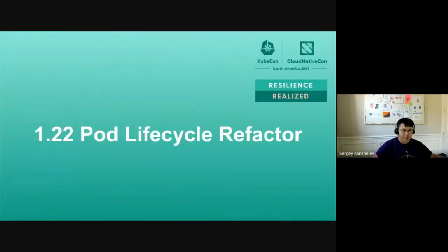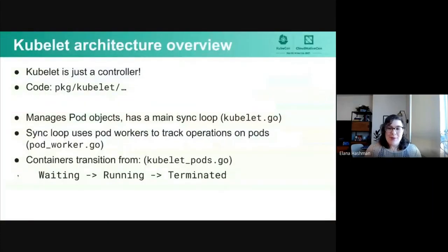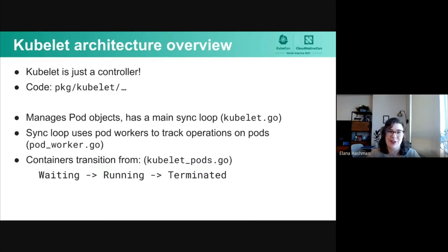KEPs are very important for delivering new features, but equally important is reliability, refactoring, and optimization work. So it's really important for SIG Node to be able to pay down technical debt as it accumulates over time. In the 1.22 release cycle, we did some pretty substantial refactoring of the pod lifecycle. To understand that refactoring, here's a quick overview of the kubelet: the kubelet is a controller that turns a machine into a Kubernetes node. The code lives mostly in package kubelet with entry points in command kubelet. Like any other controller, the kubelet manages a certain kind of Kubernetes object — in this case, the pod — and it has a main sync loop found in kubelet.go.